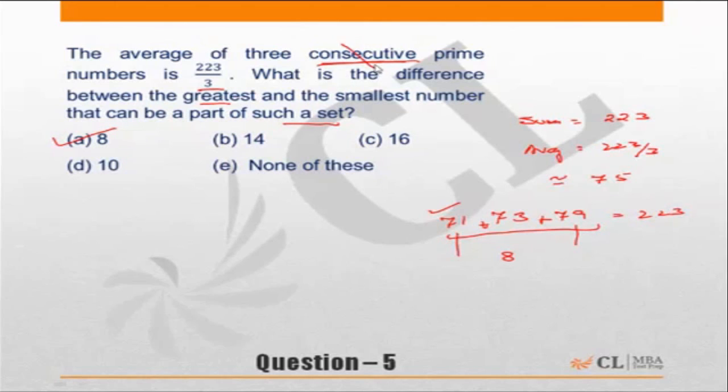If the question did not have the word consecutive, then it could have been a very different scenario. We would need to find out if there are other combinations that give us a sum of 223, and there could be many of them.